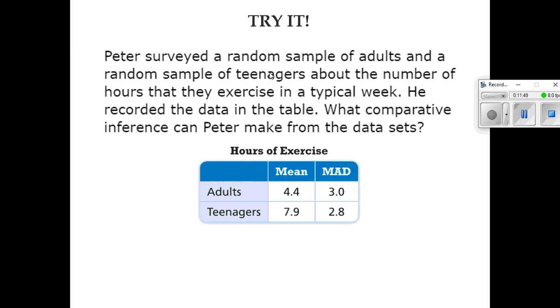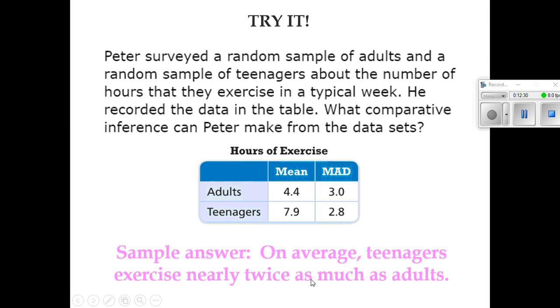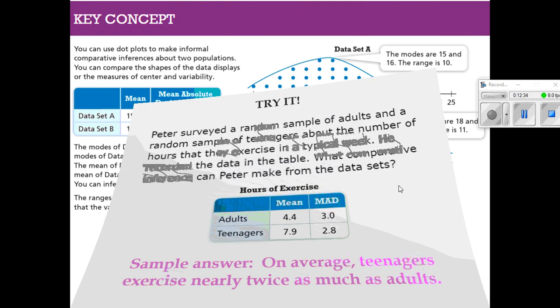In our Try It, it says Peter surveyed a random sample of adults and a random sample of teenagers about the number of hours that they exercise in a typical week. He recorded the data in the table. What comparative inferences can Peter make from the data sets? Remember, an inference is just information that you feel you can pull from it. Well, if I'm looking at this, adults, the average of adults worked out about 4.4 hours in a week. And the average for teenagers was 7.9. Well, I mean, 7.9 is really close to 8. That's almost twice as much as the adults did. So I guess I can say that according to the data, on the average, teenagers exercised nearly twice as much as adults.